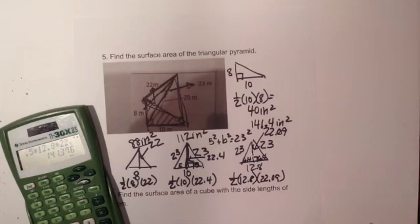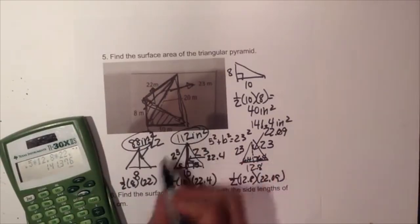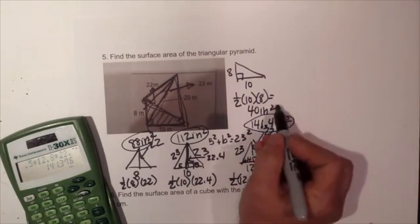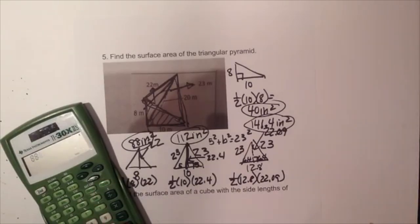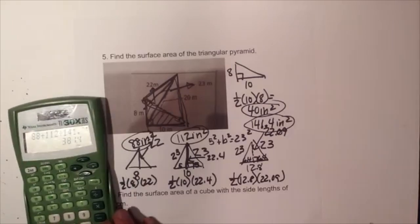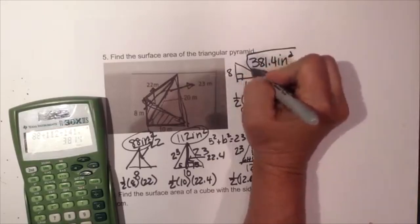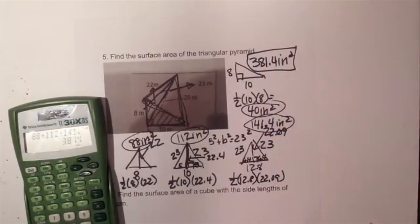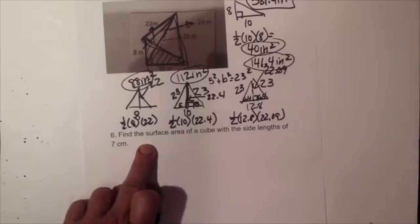Now I add all four faces together to find the total surface area: 88 plus 112 plus 141.4 plus 40 equals 381.4 square inches. That's the total surface area of the triangular pyramid — definitely the toughest problem of the set.